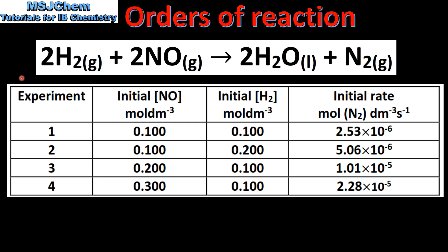Next we look at how to determine the order of reaction with respect to a particular reactant from experimental data. Here we have the initial concentrations of nitrogen monoxide and hydrogen, and the initial rate of formation of nitrogen. In experiments 1 and 2, the concentration of nitrogen monoxide is kept constant and the concentration of hydrogen is doubled. The rate of reaction has doubled from 2.53 × 10⁻⁶ to 5.06 × 10⁻⁶. By doubling the concentration of hydrogen we've doubled the rate of reaction — this is a directly proportional change, therefore the reaction is first order with respect to hydrogen.